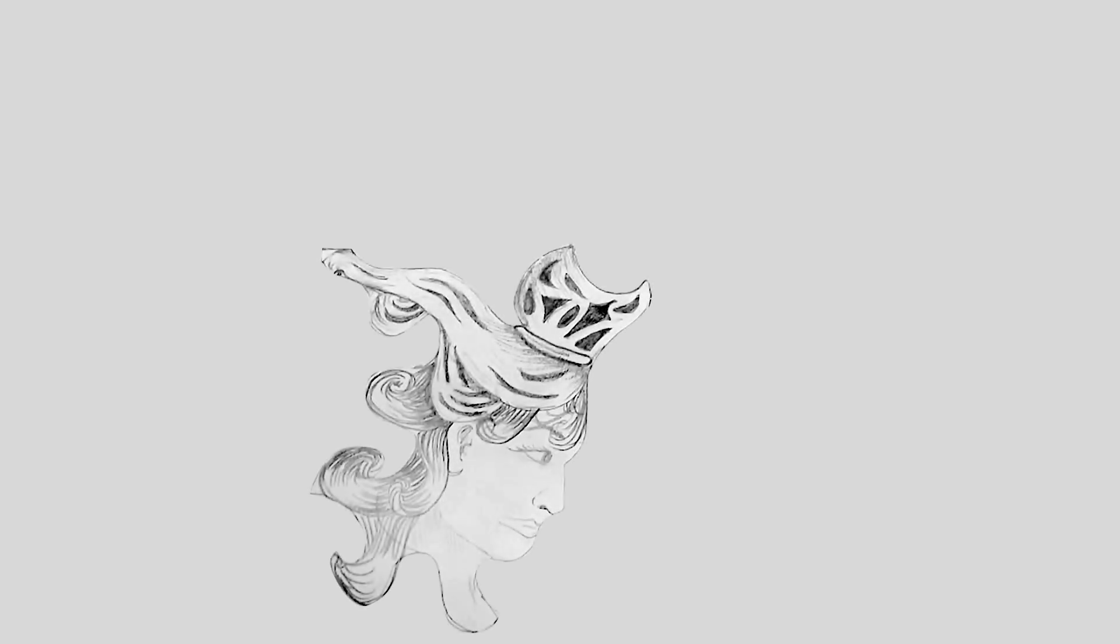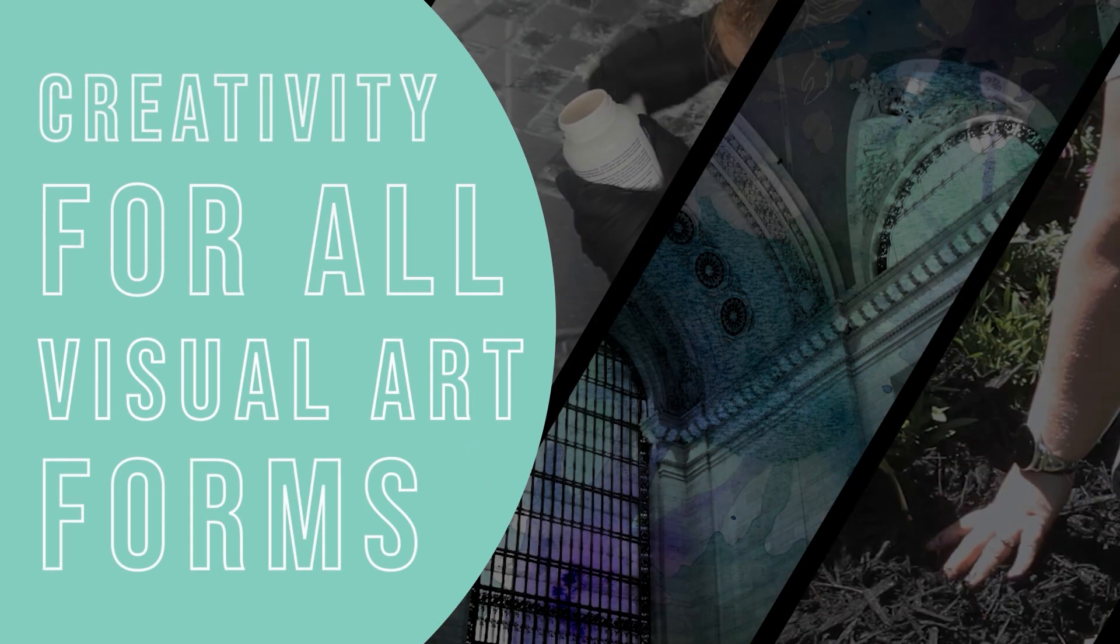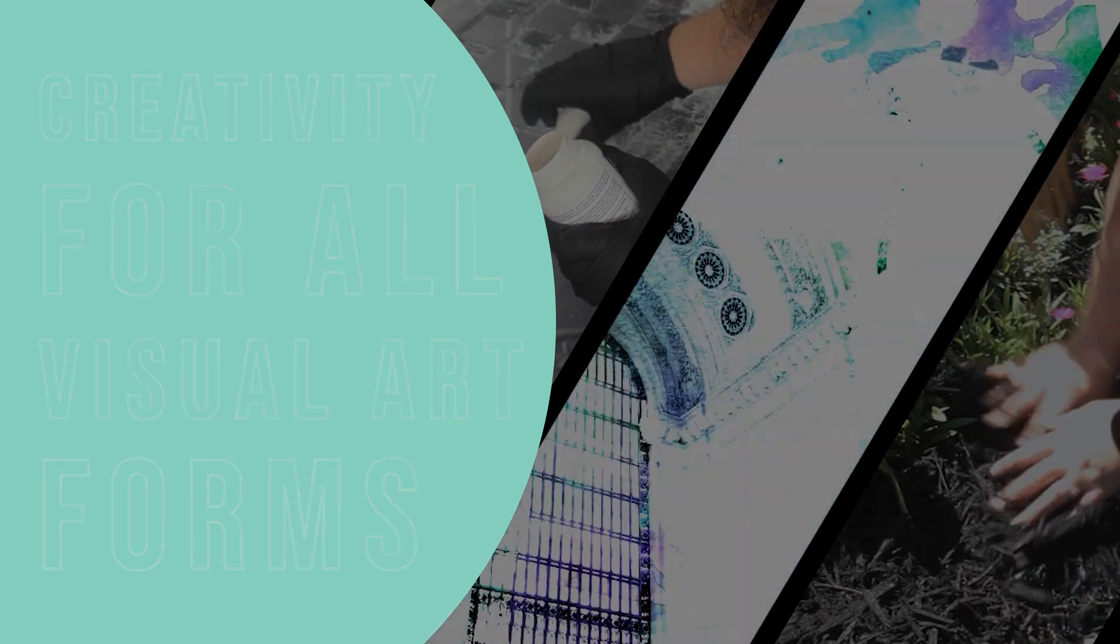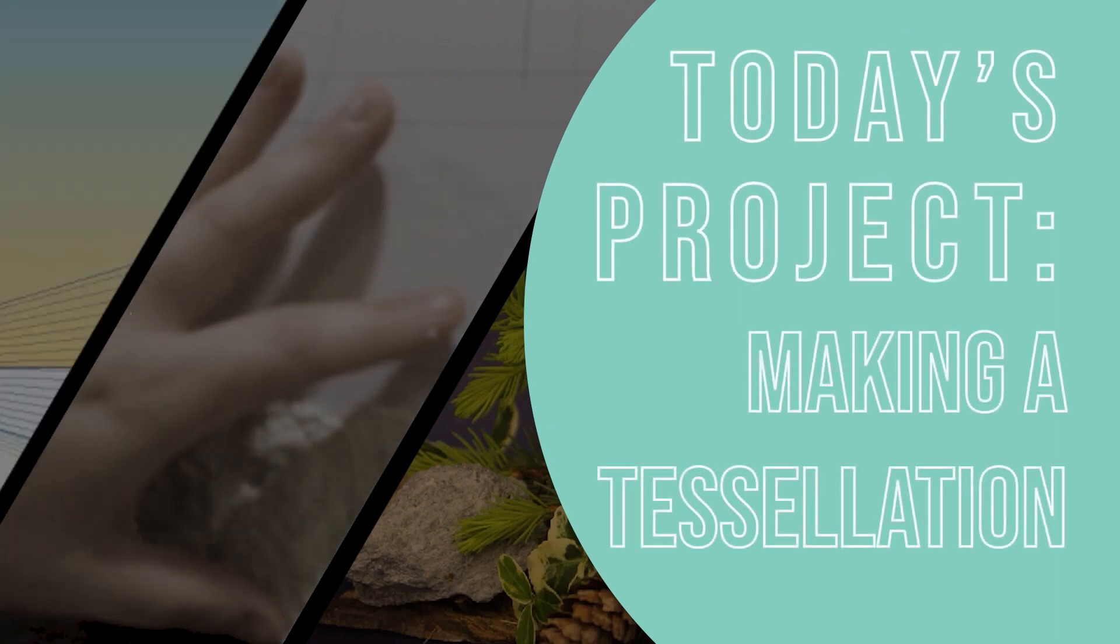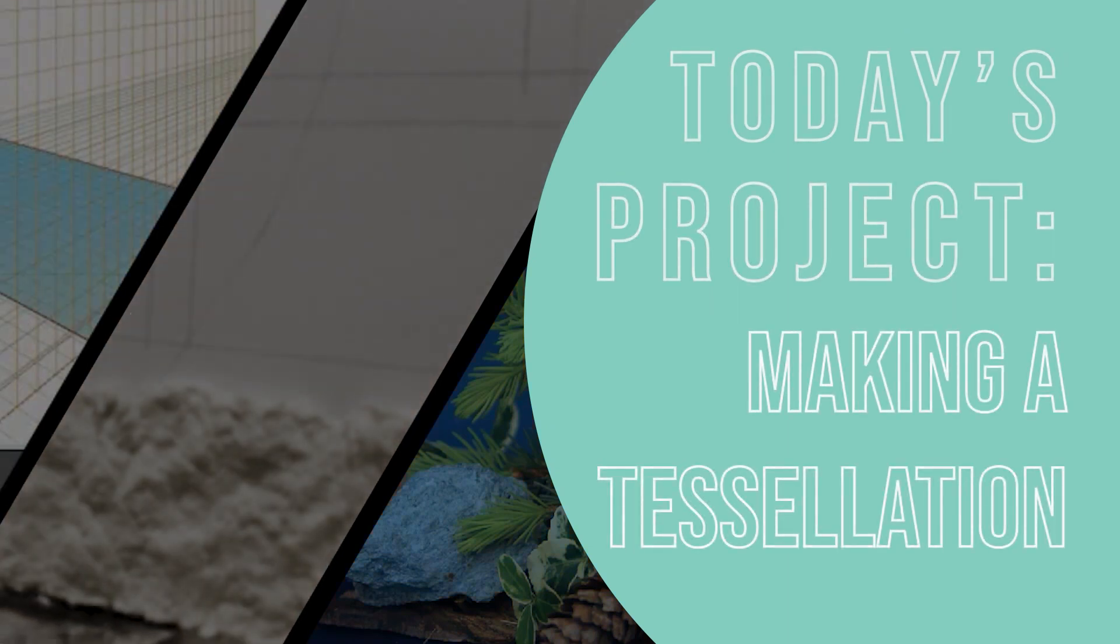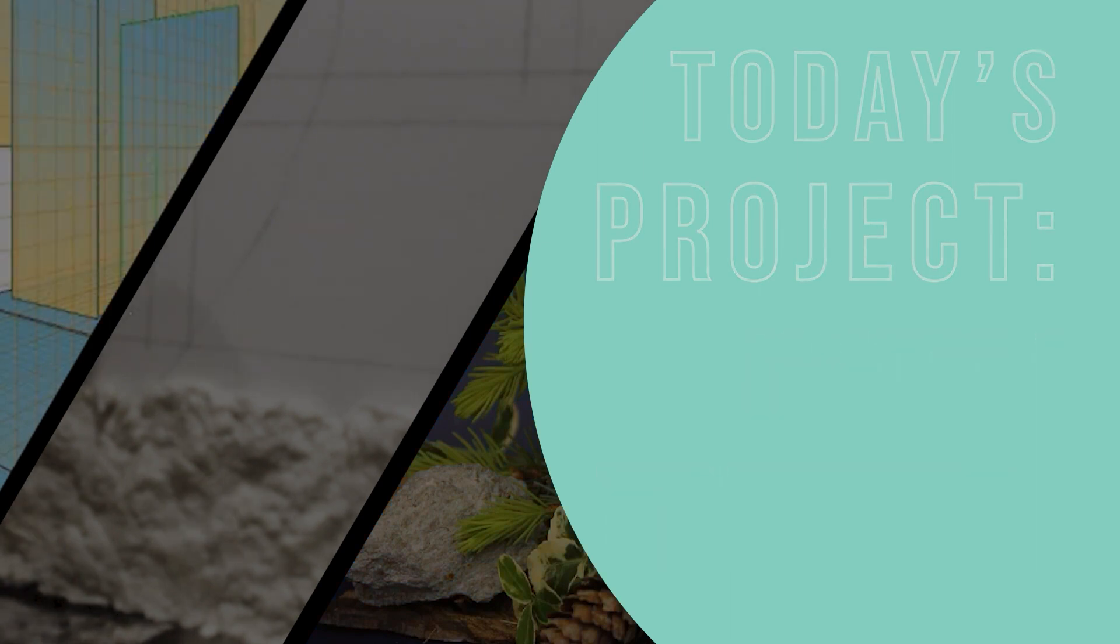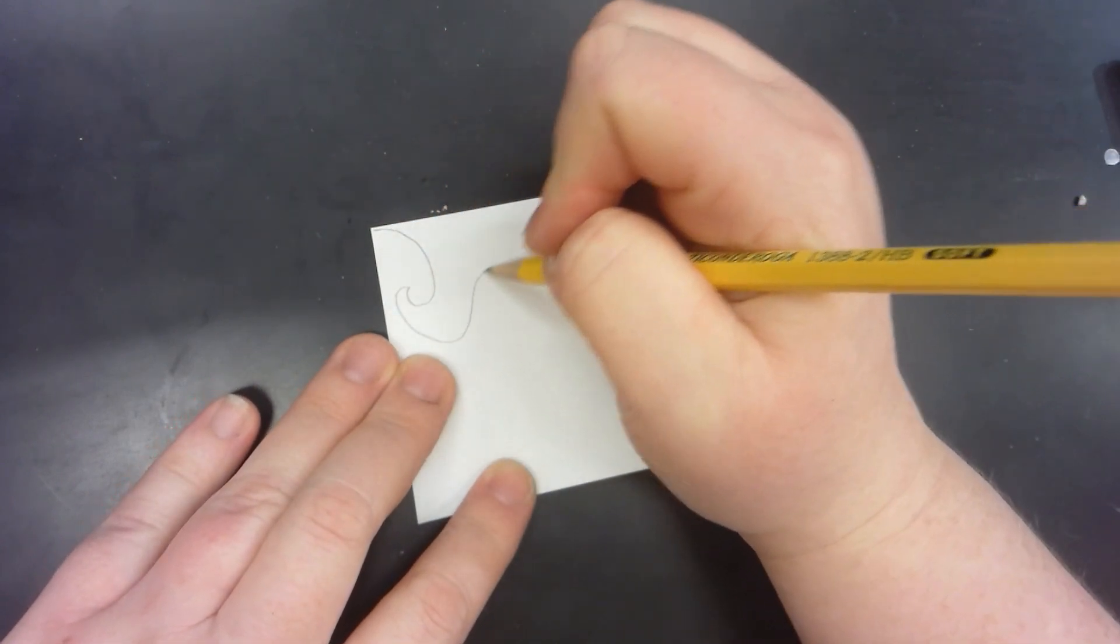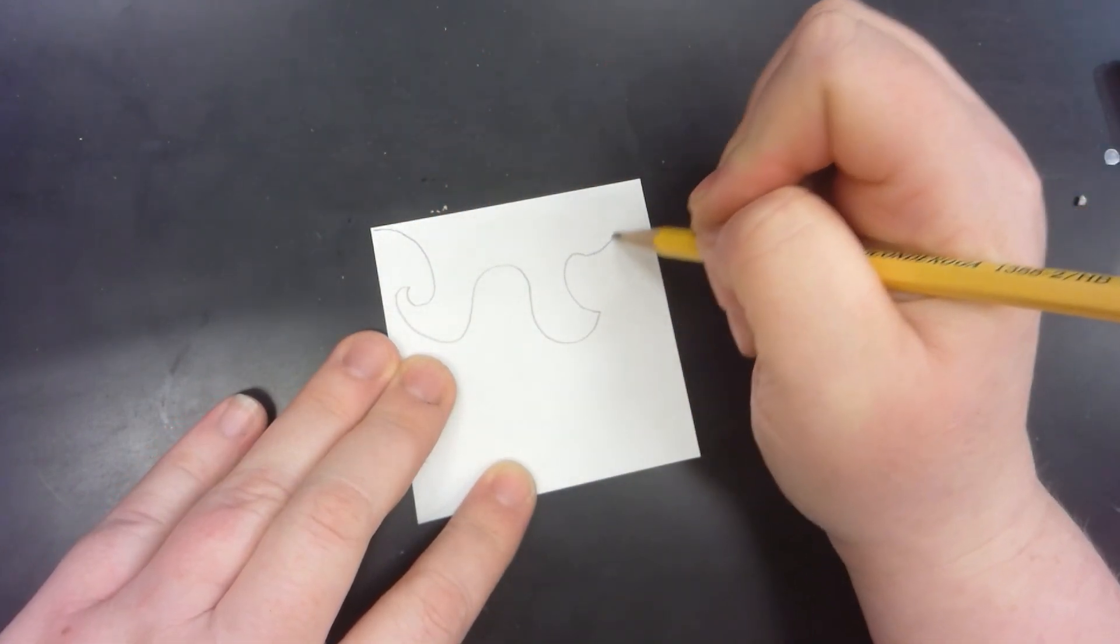Today we're going to be making a singular tessellation that can be repeated indefinitely. To get started, we are going to use a square, although you could use a rectangle as well, and we are going to draw a random design from one corner to the other.